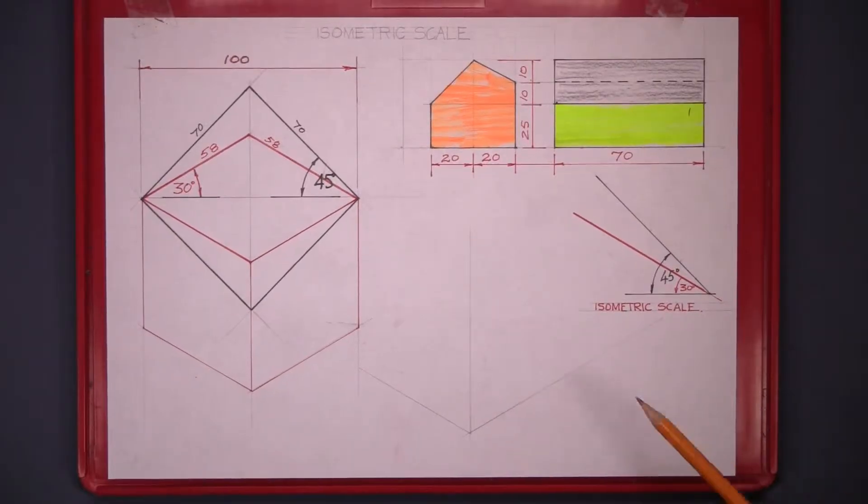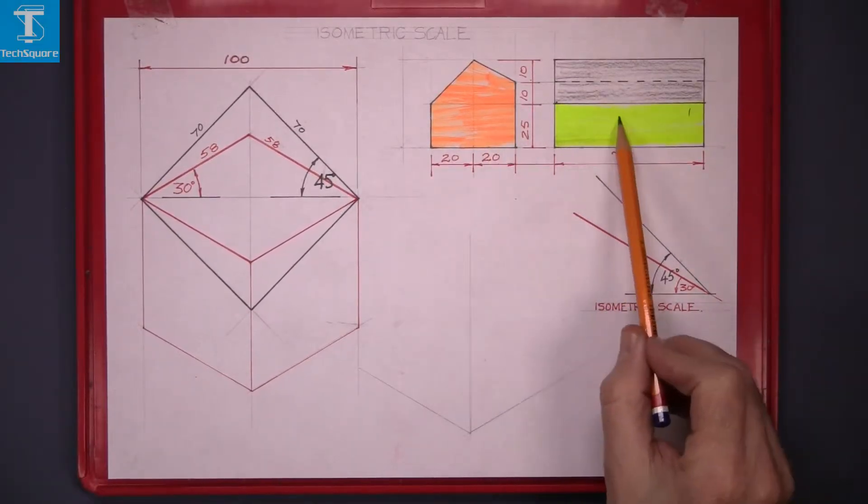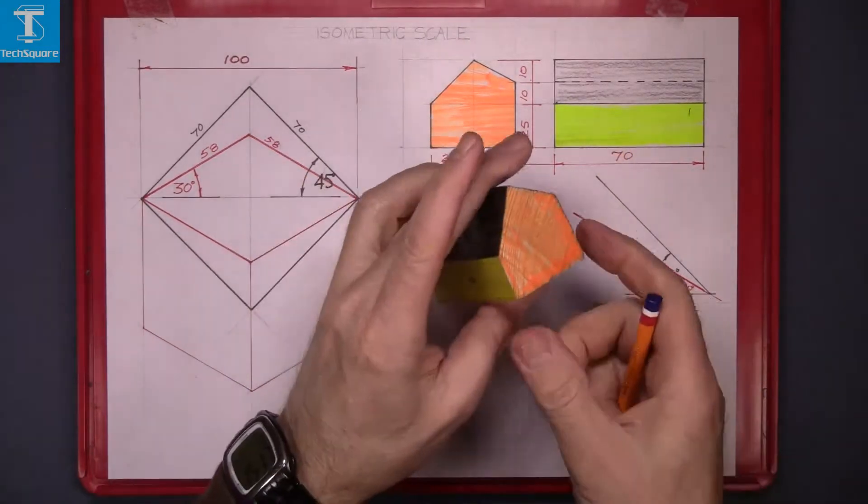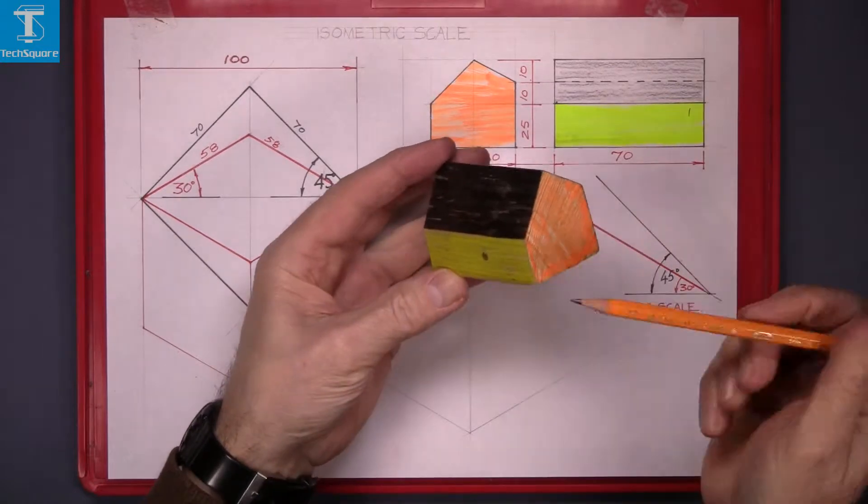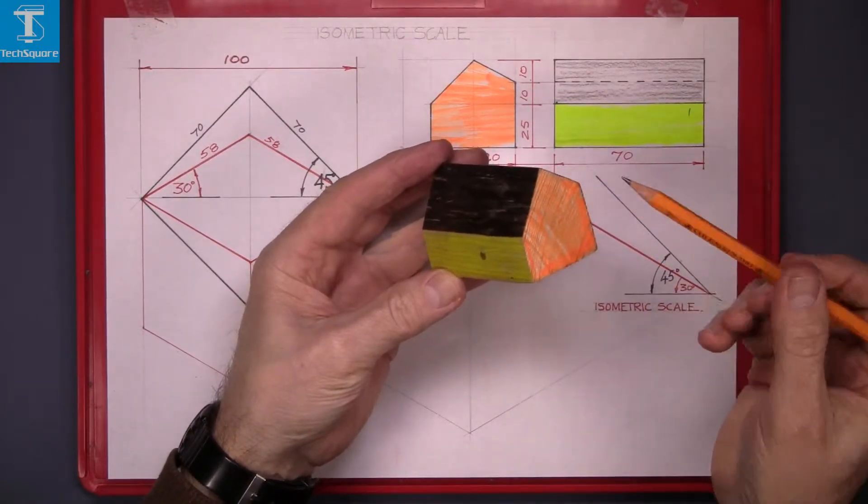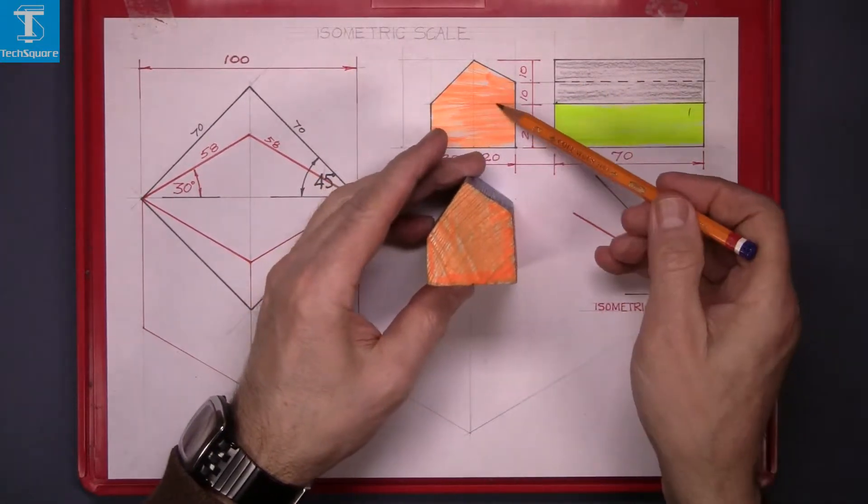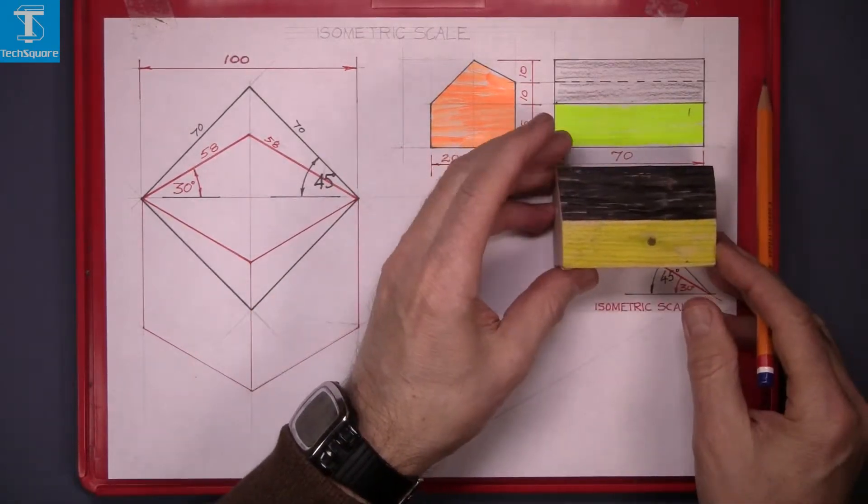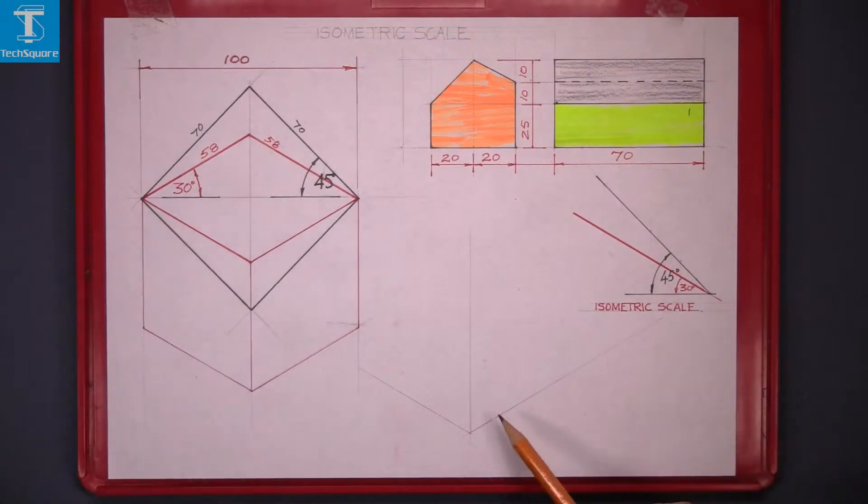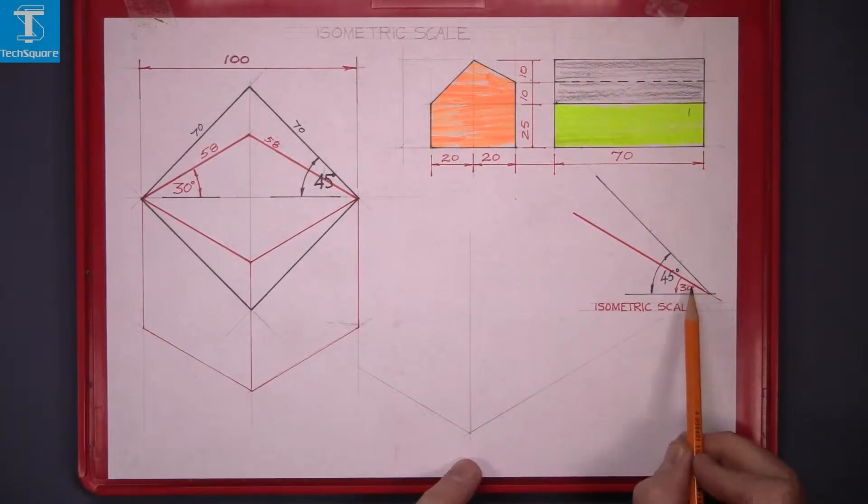Isometric scale again. Given these two views here of this block of timber, it's in the shape of a house with two different slope roofs. That's the end view and that's the elevation. What we are asked to do is draw the isometric view using the isometric scale. I've set up this diagram.